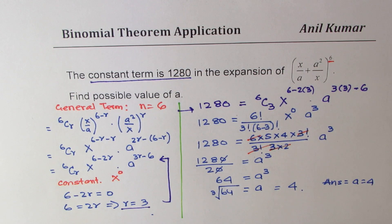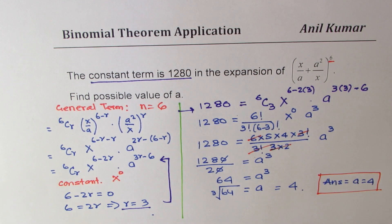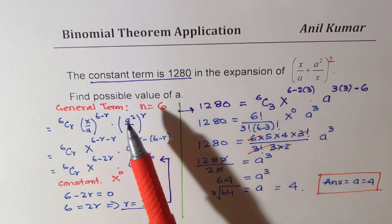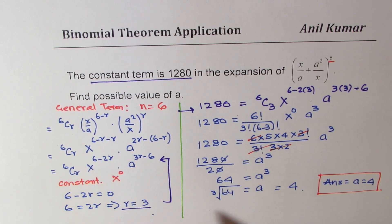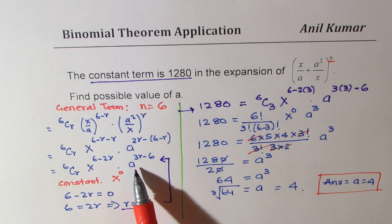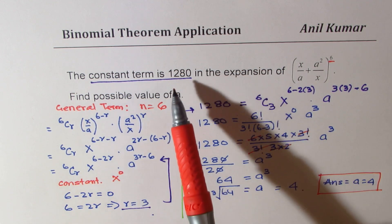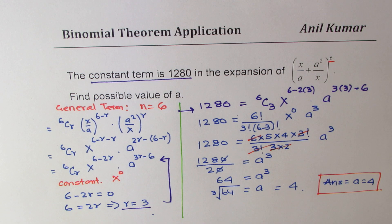So that is how we could solve it. I would like you to go through this solution, try to understand how we got this solution. So the idea is, write a general term, equate the exponent of x as 0, find the value of r. Once you get r, then substitute it back to your general term and find the value of a by equating the term to 1280. So I hope that is absolutely clear. Feel free to write your comments and share your views. If you like and subscribe to my videos, that'd be great. Thanks for watching and all the best.